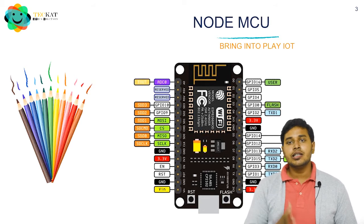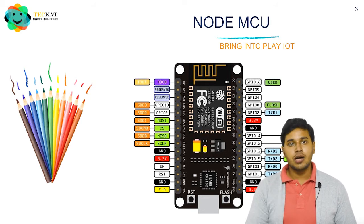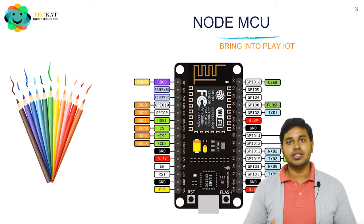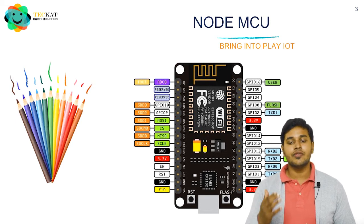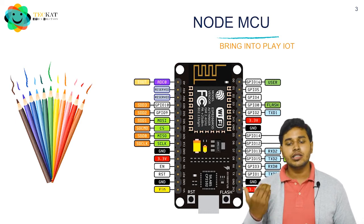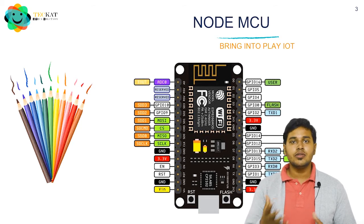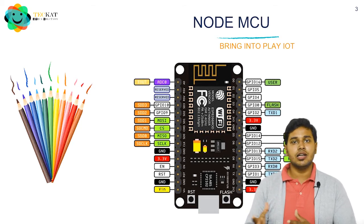Similarly, the GPIO numbers for the other digital pins are different numbers like 5, 4, 8, 3, and 2, and so on.